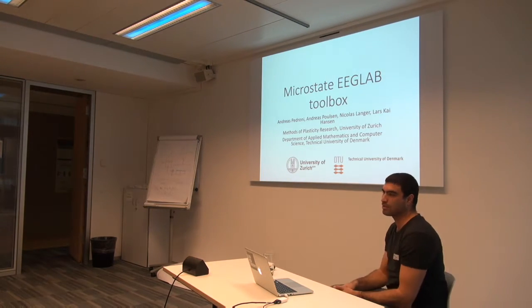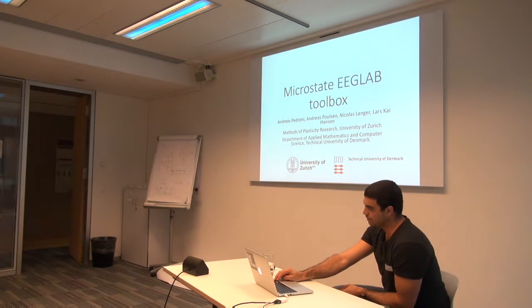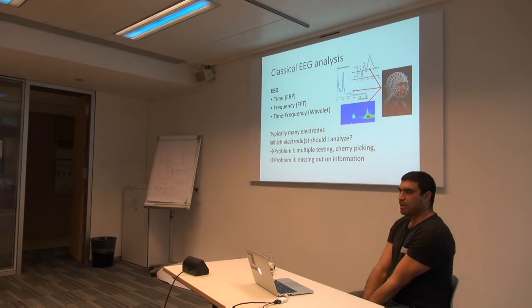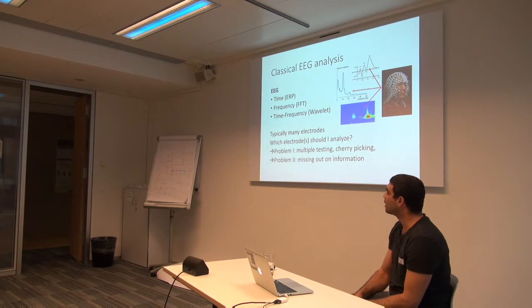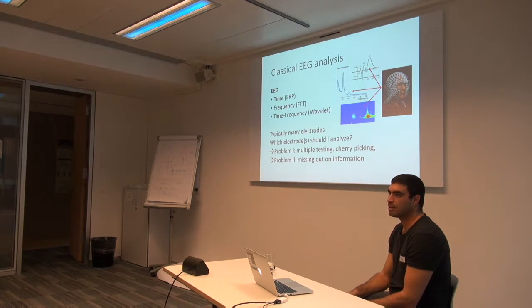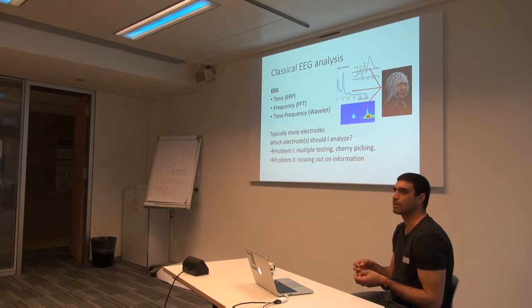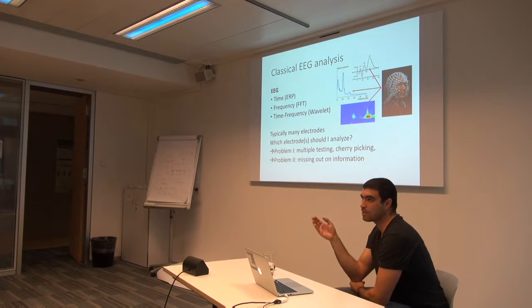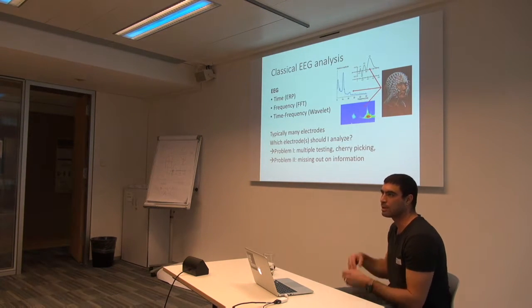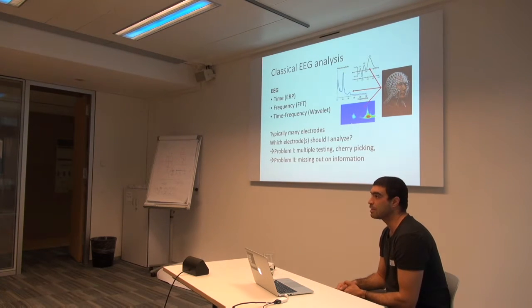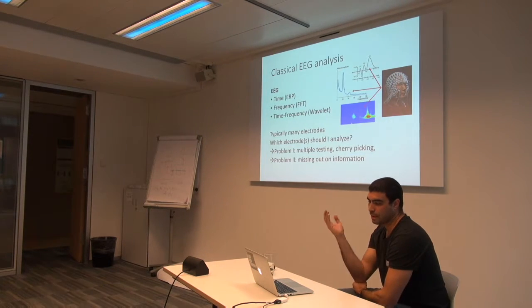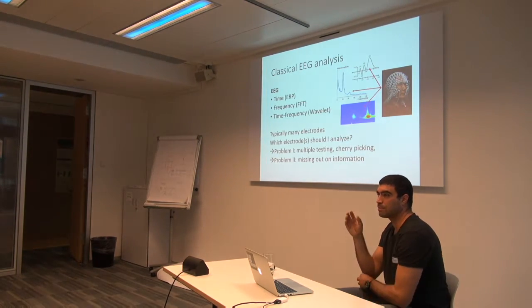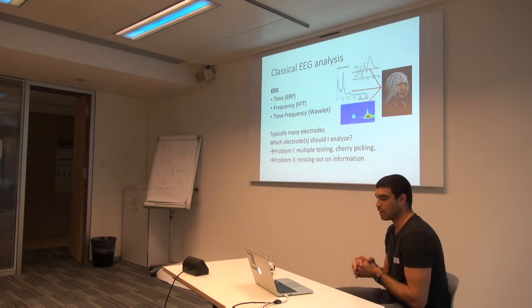I will begin with a short introduction to EEG microstates. EEG microstates are not really the classical way how people look at EEG data. In the classic way, EEG is typically looked at single electrodes or a selection of electrodes. People look at event-related potentials — what happens after a stimulus or some event — or they look at the frequency distribution over time, or time-frequency analysis. All these techniques typically select some electrodes and do their analysis on those electrodes.